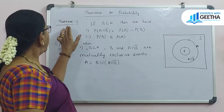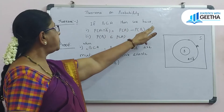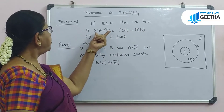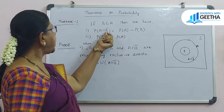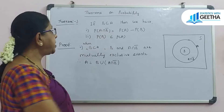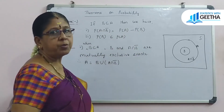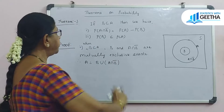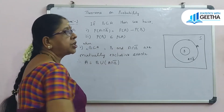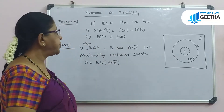If B is a subset of A, then we have two results. First: P(A ∩ B') equals P(A) minus P(B). Second: probability of B is less than or equal to P(A).